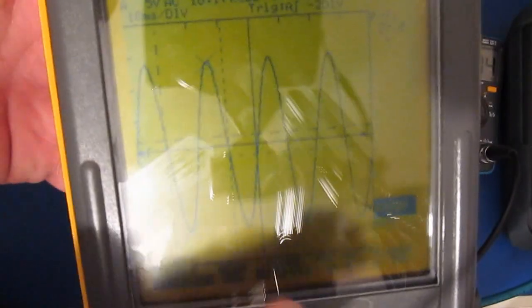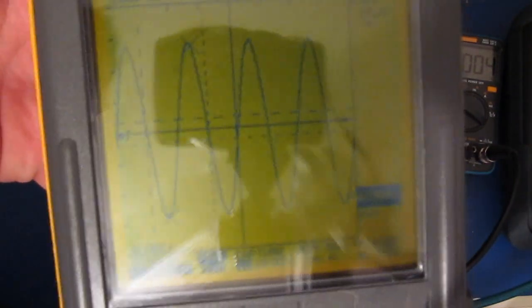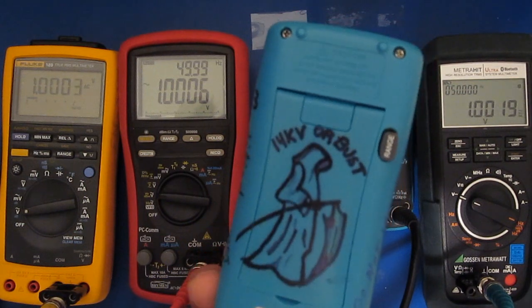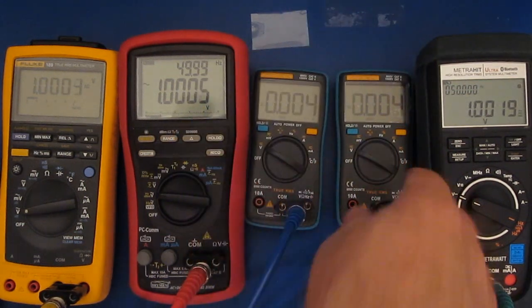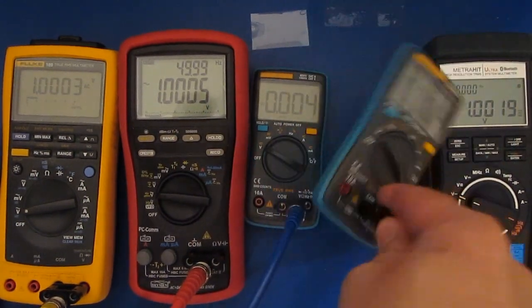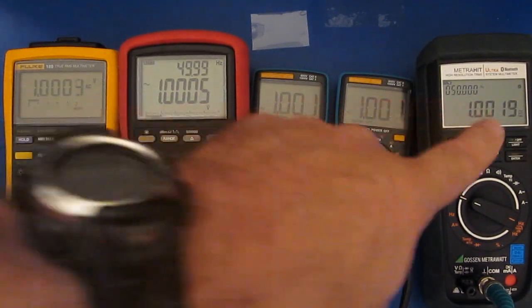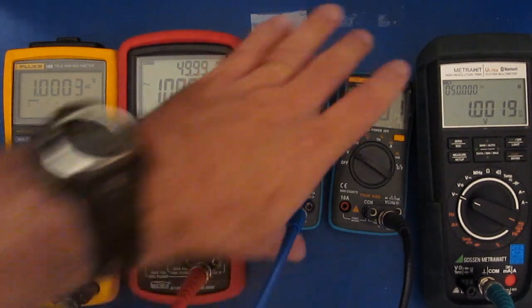All right you can see I'm outputting a sine wave right now and this is at one volt. You can see on the left this is our modified meter, the one on the right this is our virgin one. We'll just set these to AC and you can see all five meters are basically reading one volt.